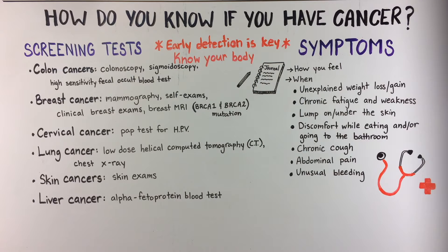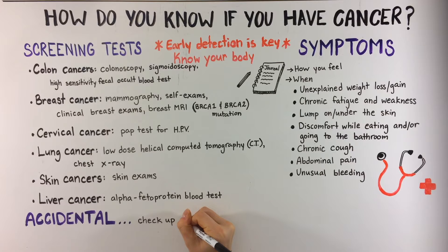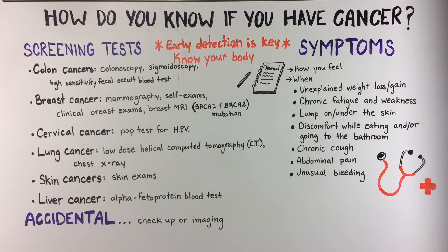There are times when cancer diagnosis is accidental. For example, you could be visiting your doctor for a routine checkup and he or she notices some abnormal signs or symptoms that you were unaware of. Or you could be getting imaging done for an injury or illness and abnormalities are noticed. In these cases, further testing is usually done to rule out whether cancer is in fact present.